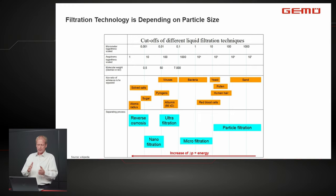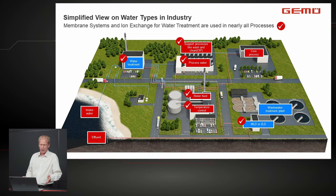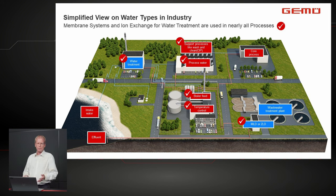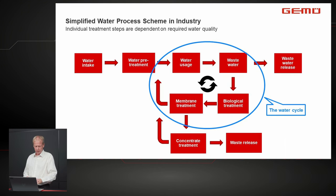You select the filtration method according to the particles you want to remove. In industrial processes, membrane filtration and ion exchange are used for both inlet and wastewater treatment. There is general water treatment at the beginning, wastewater treatment at the end with minimized or zero liquid discharge, and various process water treatments in between — for example, deionized water for boiler feed requires higher quality than washing water.